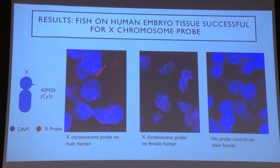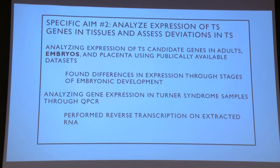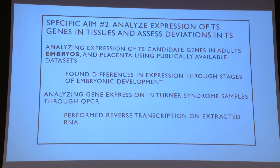That brings me to my specific aim number two: to analyze expression of TS genes in tissues and assess deviations in Turner Syndrome. I had a lot of RNA-seq expression data for various samples — mostly embryos, which is what I'll be reviewing. I wanted to look at gene expression throughout embryonic development in normal patients without Turner Syndrome, examining those TS candidate genes. The second part used quantitative PCR to actually analyze Turner Syndrome samples and look at relative expression of these TS candidate genes.